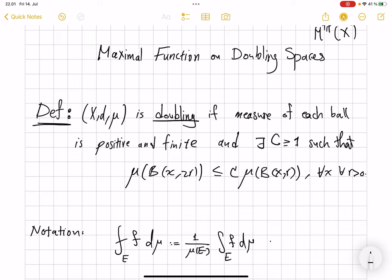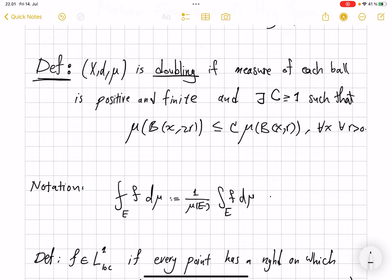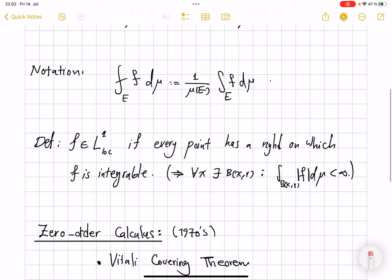Let's recall quickly that we say a metric measure space is doubling if measure of each ball is positive and finite, and for a universal constant c, the measure of twice the radius is bounded by that constant times the measure of the balls themselves. This is some kind of control that just doubling the radius of the ball doesn't blow up the measure too much.